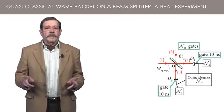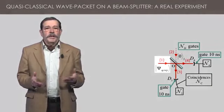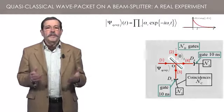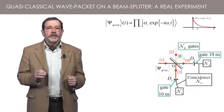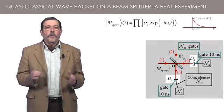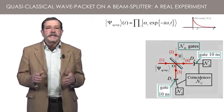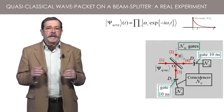This is the scheme of the experiment. A quasi-classical wave packet with a duration of a few nanoseconds is sent on a beam splitter. Detections are performed in channels 3 and 4 during time windows, called gates on the figure, synchronized with the expected arrival time of the wave packet.